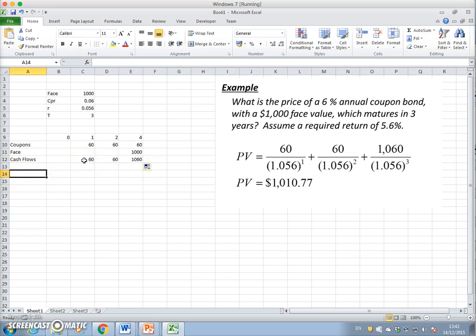To get the present value, we need to get the discount factors. The discount involves taking 1 divided by (1 + the rate of interest), that's 0.056 F4, close off and put the power of the time period. The time period is in this instance one year. We can drag that across. This is the discount period: 1 divided by (1 + 0.056) to the power of two years and three years.